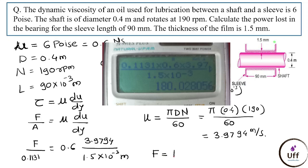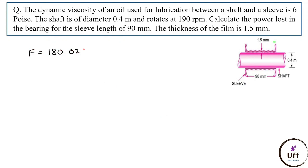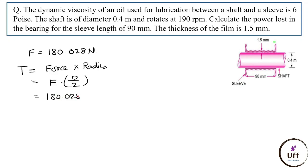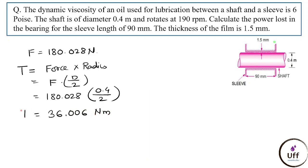Substituting all values: F/0.1131 = 0.6 × (3.9794 / 1.5 × 10⁻³), giving force = 180.028 N. Then torque T = F × (d/2) = 180.028 × (0.4/2) = 36.006 N·m.